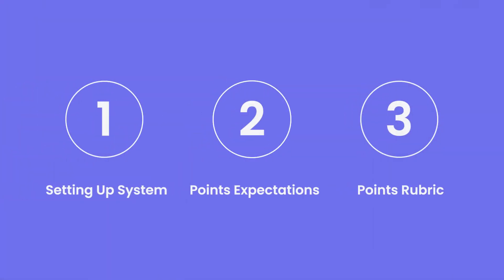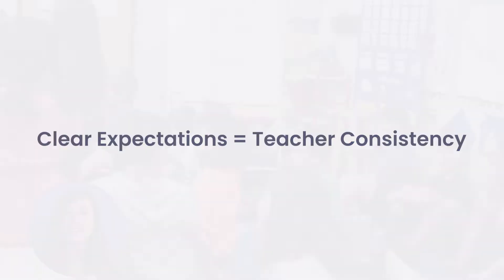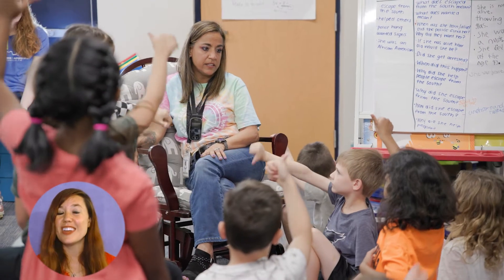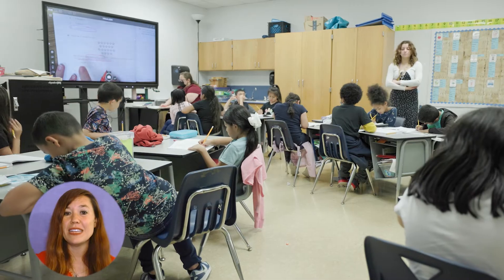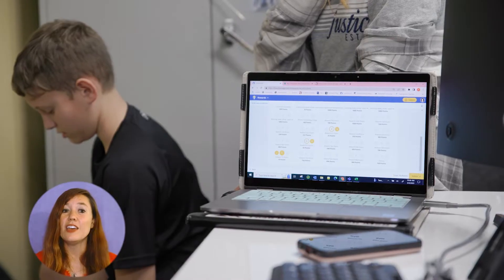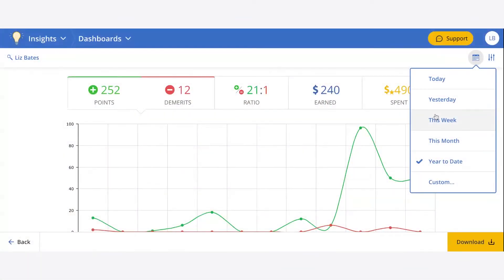Another important aspect of your LiveSchool point system is the number of points you expect your teachers to give each week. Setting clear expectations helps ensure consistency among your teachers. If there's a significant disparity in the number of points given by teachers, it can disrupt your token economy. To address this, we recommend using a per-week gauge.